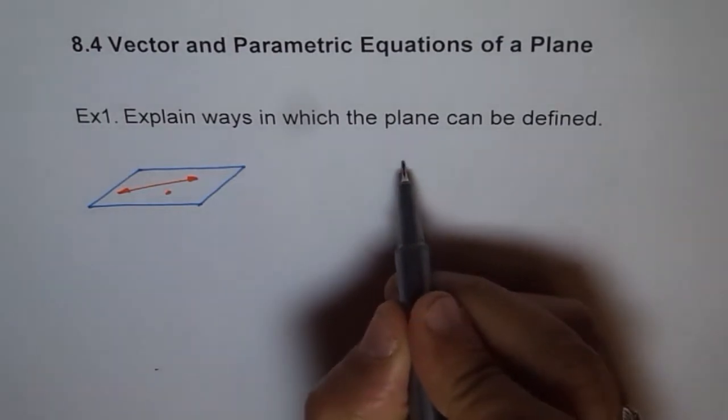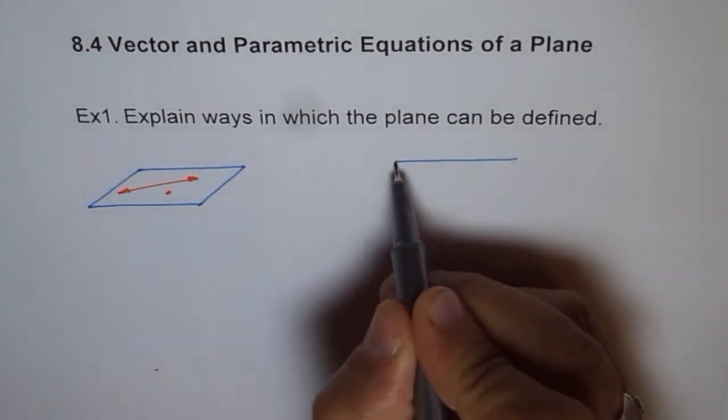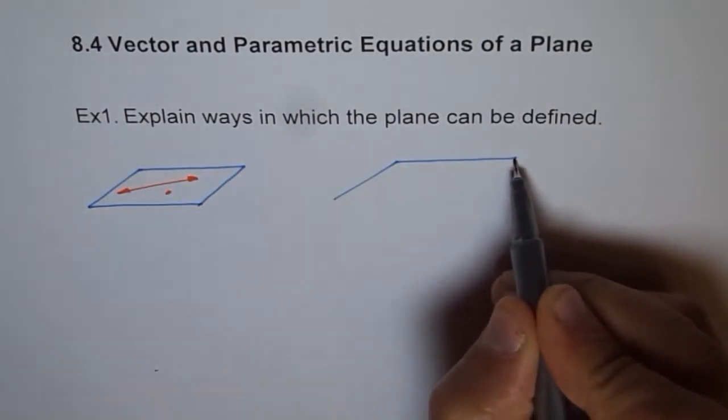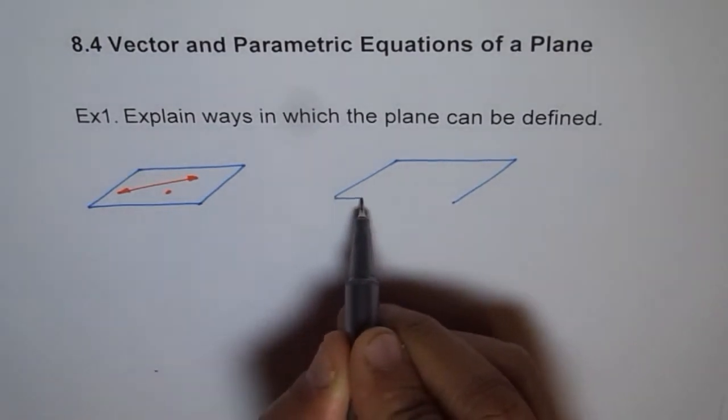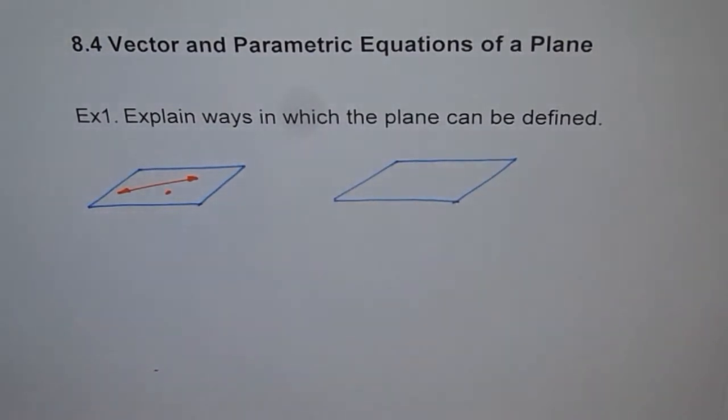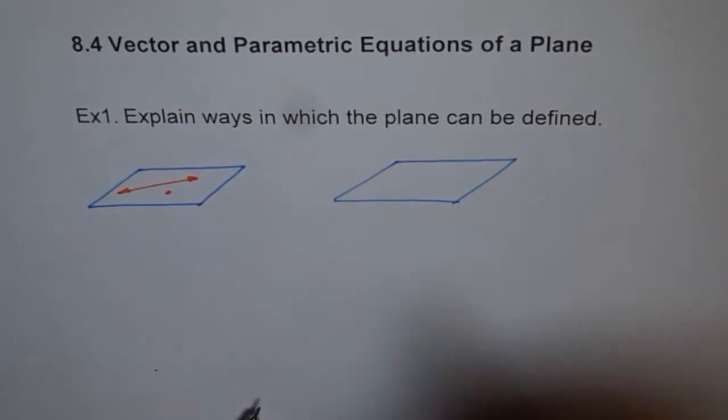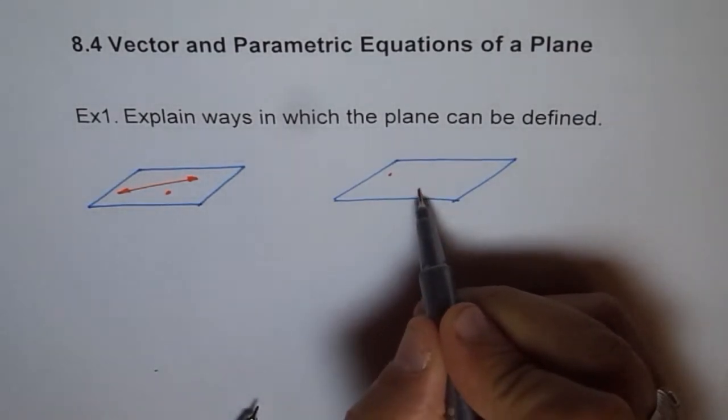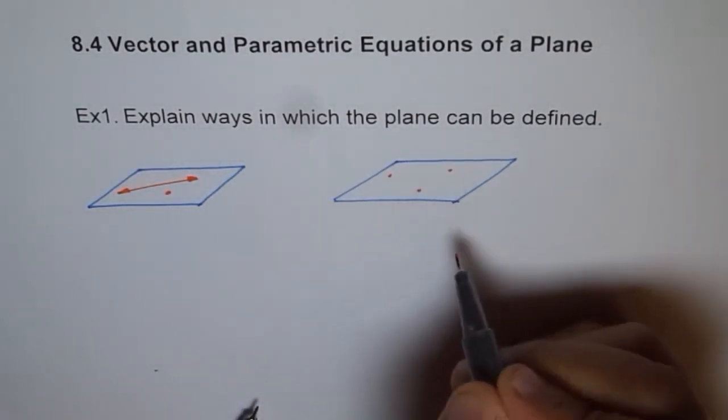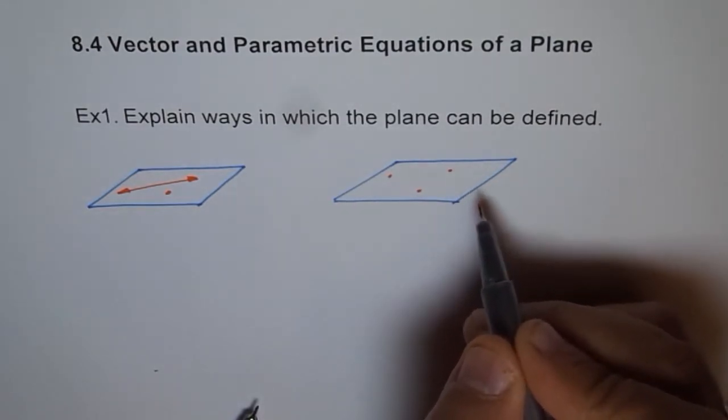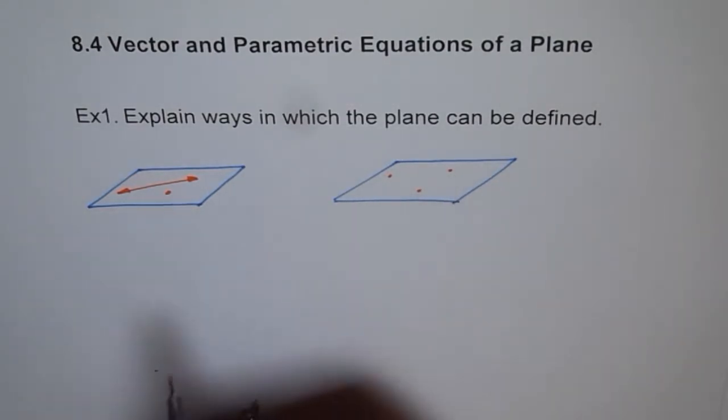The second way of defining a plane is to have three different points which are not collinear. What I'm trying to say is three points which are not in a straight line. Then also you can make a plane. You understood this one.